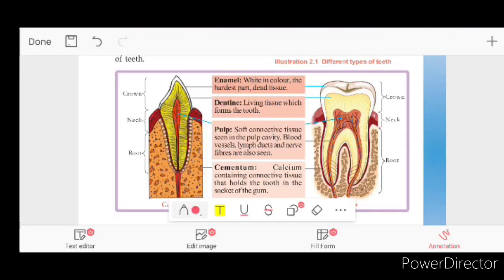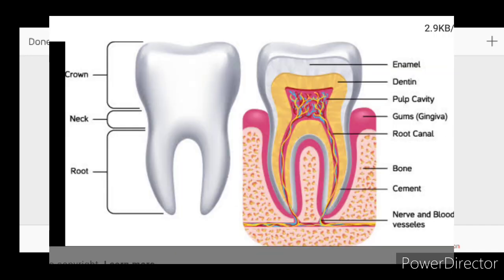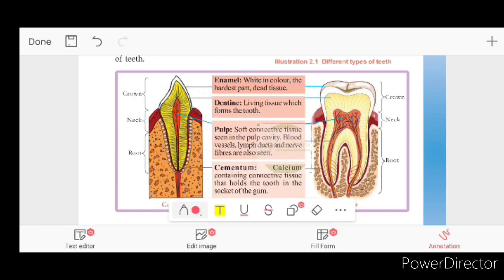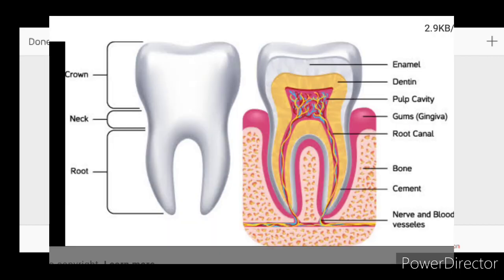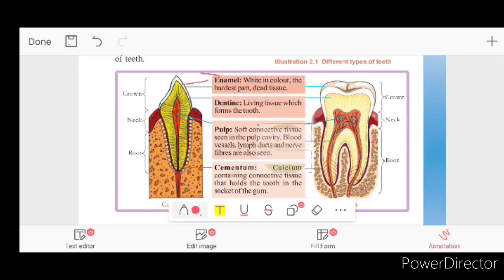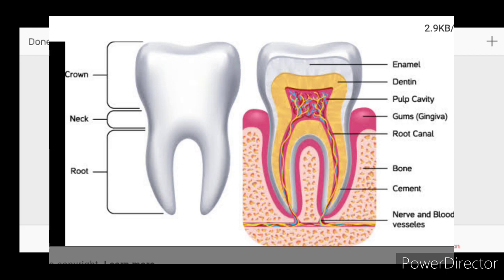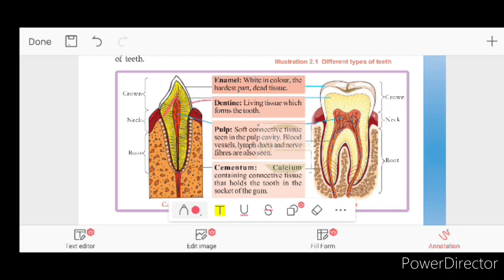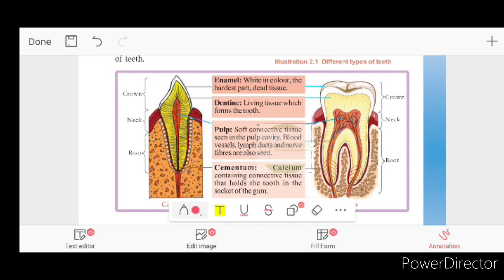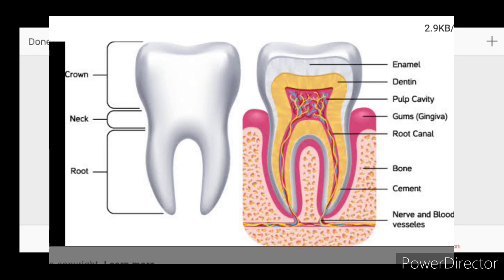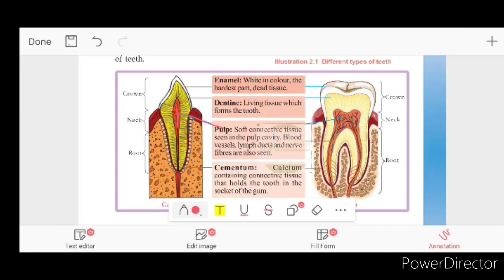A tooth has a crown, neck, and root. The outermost covering is called enamel — the hardest part, made of dead tissue. Below that is dentine, which is living tissue that forms the tooth. Inside is the pulp cavity, which contains soft connective tissue, blood vessels, lymph vessels, and nerve fibers.